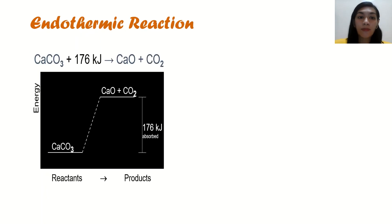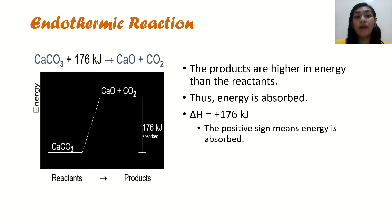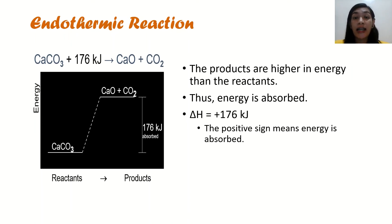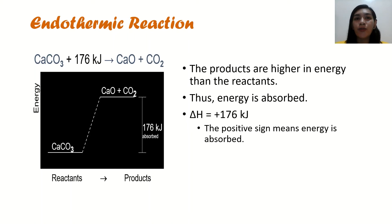For an endothermic reaction, we have: calcium carbonate + 176 kilojoules → calcium oxide + carbon dioxide. The energy is now on the reactant side. In this reaction, the products are higher in energy than the reactants, so the energy is absorbed. The positive sign means that the energy is absorbed — 176 kilojoules of energy. So for exothermic reactions, the energy is found on the product side, while for endothermic reactions, the energy should be located on the reactant side.